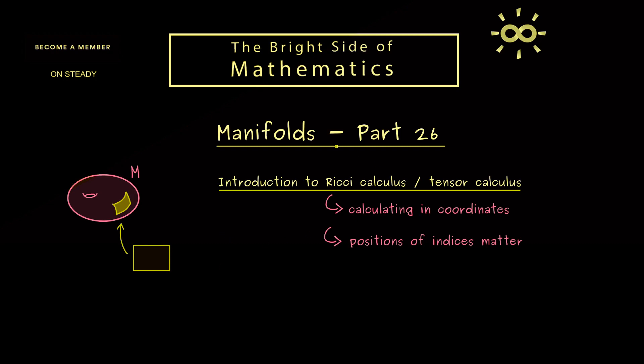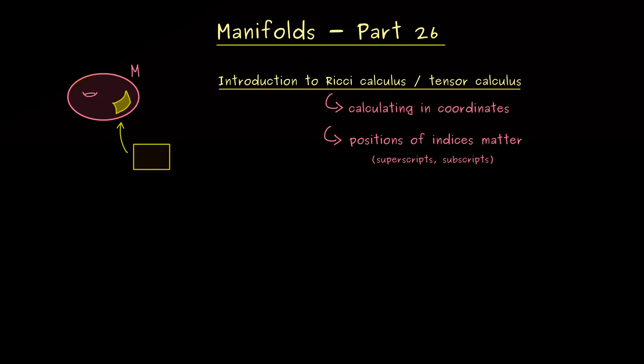However, now the Ricci calculus does something funny, namely the positions of the different indices matter. Indeed, you have to deal with superscripts and subscripts. This means here we have a hidden meaning in the position of a given index. However, I would say let's do that in more detail now.